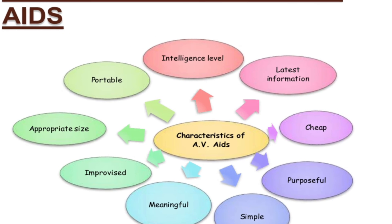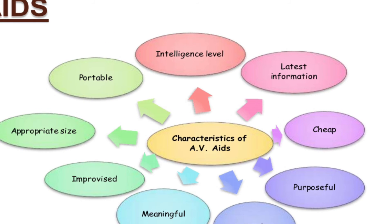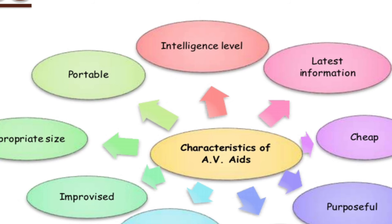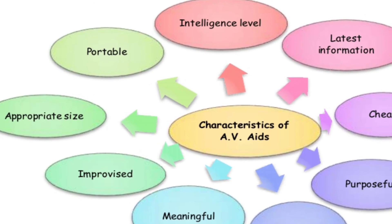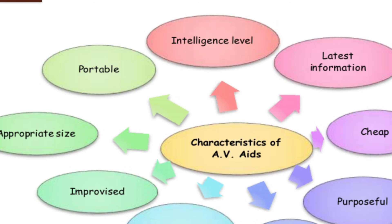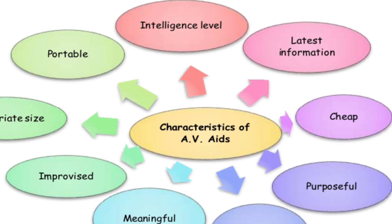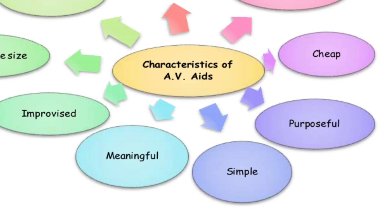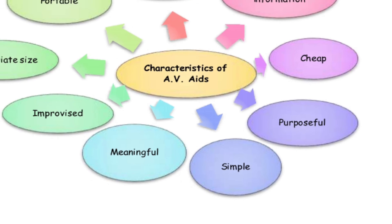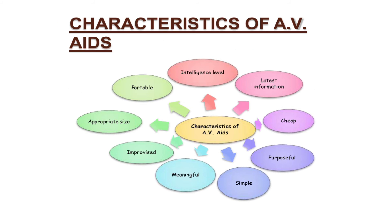The characteristics of AV Aids: it should be appropriate in size. It should be portable — easily transportable. It should be based on the intelligence level of the audience; for instance, if the audience are illiterate, you can use diagrammatic representations. Latest information should be covered. It should be cheap, purposeful, simple, meaningful, and improvised. So the characteristics are: appropriate size, portable, intelligence-level appropriate, latest information covered, cheap, purposeful, simple, meaningful, improvised.